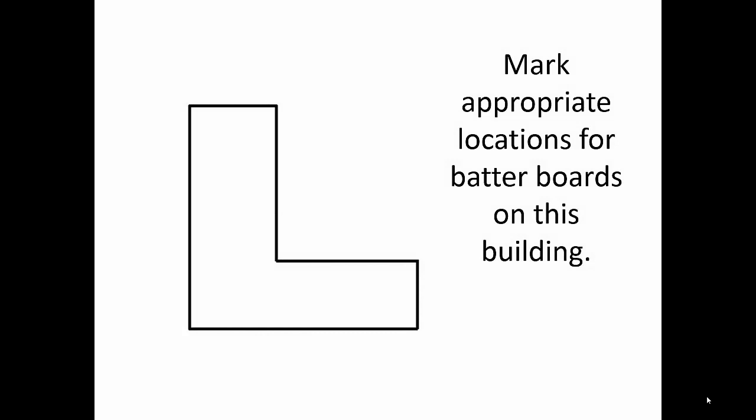So, let's consider how we would set batter boards for this building. We'll assume that north is at the top of the image here. So, we have three north-south lines, and we have three east-west lines that we need to mark with offsets beyond the limits of our excavation. So, let's start with the corners.